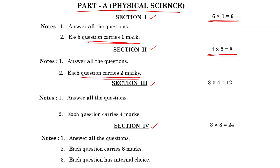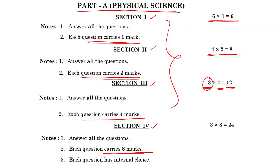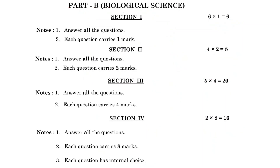Section 3 has 4-mark questions — 3 questions worth 4 marks each, giving 12 marks total. There is no choice in Sections 1, 2, and 3. Section 4 has 8-mark questions with internal choice (either A or B). There are 3 questions of 8 marks each, giving 24 marks total.